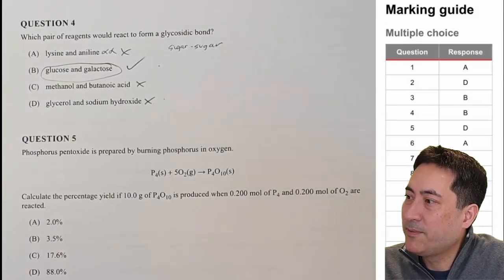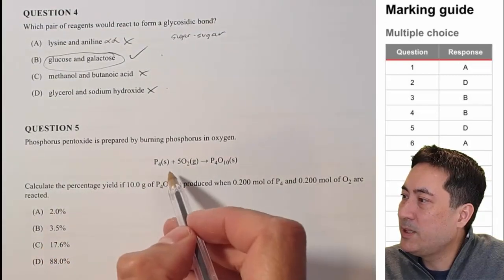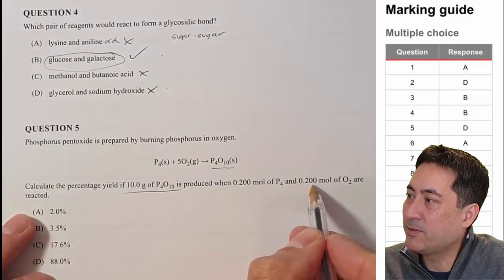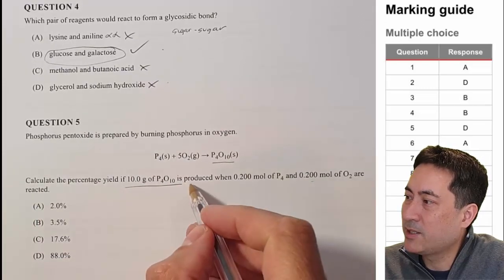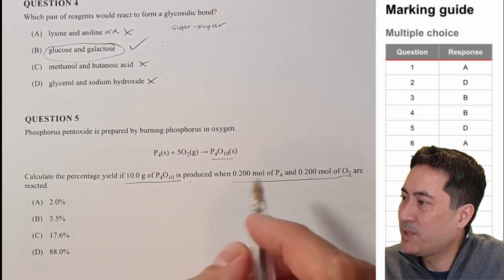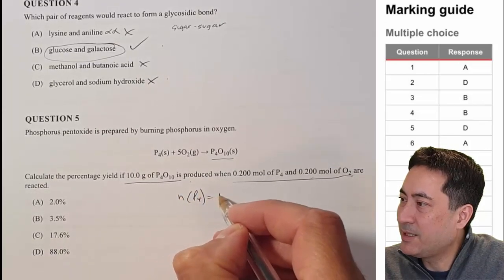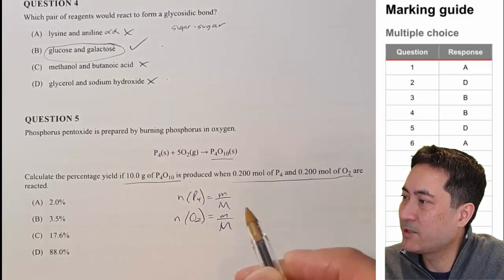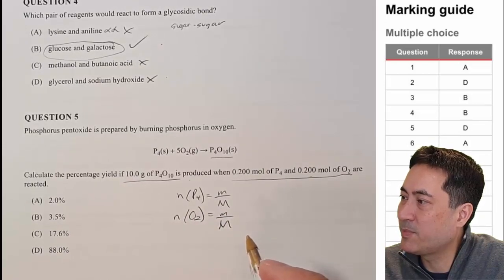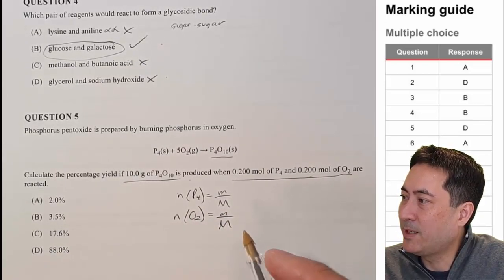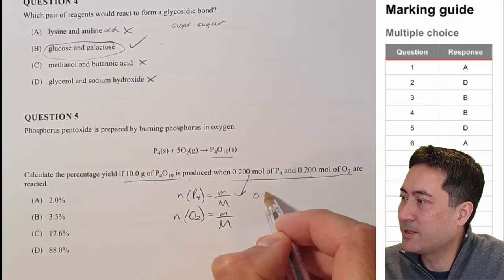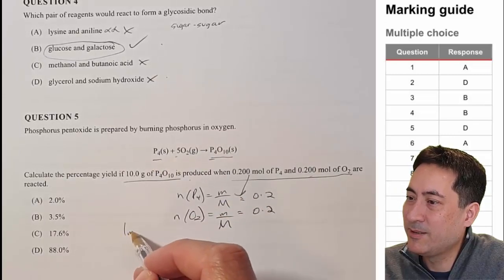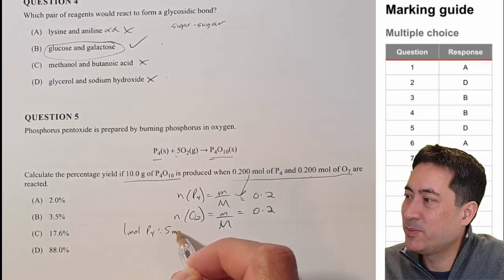Moving on to question five. If they're going to put questions like this in the test, they may as well just have multiple choice and not have short answer sections in paper two. So — percentage yield. You get 10 grams. You've got to work out the theoretical, and they've given you two amounts of moles, so you've got to do limiting reagent. I've gone straight away to do limiting reagent. Some of these questions are really quick, and then there are about three or four that are super long — and this is one of them.